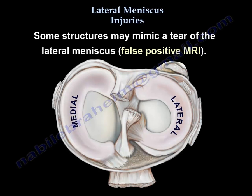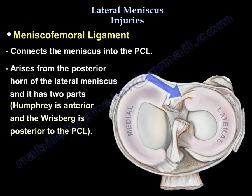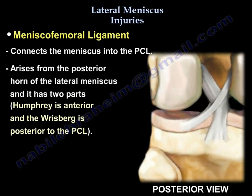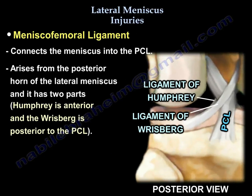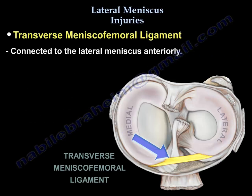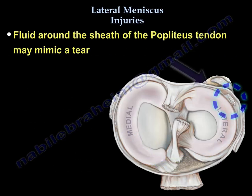There are a few structures that mimic a tear of the lateral meniscus and will give false positive MRI pictures. The meniscofemoral ligament connects the meniscus to the PCL; it arises from the posterior horn of the lateral meniscus and has two parts — the Humphrey ligament is anterior and the Wrisberg ligament is posterior to the PCL. The transverse intermeniscal ligament is connected to the lateral meniscus anteriorly. Fluid in the popliteus tendon may also mimic a tear.